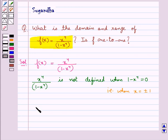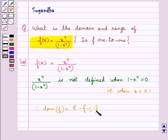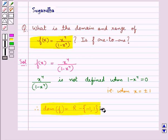In that case we say that the domain of the function f is equal to the set of real numbers minus the set {−1, 1}. That is, the set of real numbers excluding −1 and 1 is the domain of the function f. So we have found the domain of f.